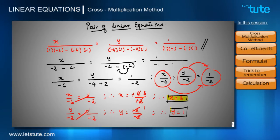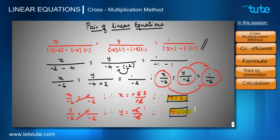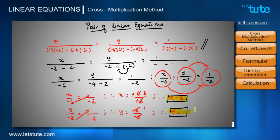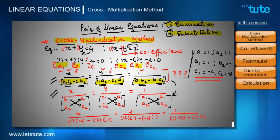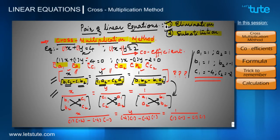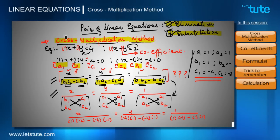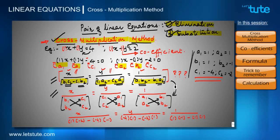These are the same values we obtained using the previous methods — elimination method and substitution method — for solving pair of linear equations. So from these sessions we have learned that in the algebraic method, we can solve pair of linear equations using any of these three methods: number 1, elimination method; number 2, substitution method; and number 3, cross multiplication method.